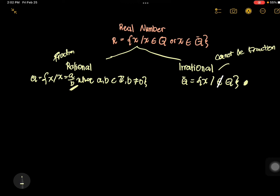When decimals are terminating, they can be expressed as a fraction. For example, you have 1.25 — it stopped, it terminates. Any number where the decimal terminates is always under rational. For example, 1.333 — terminating decimals are rational numbers.